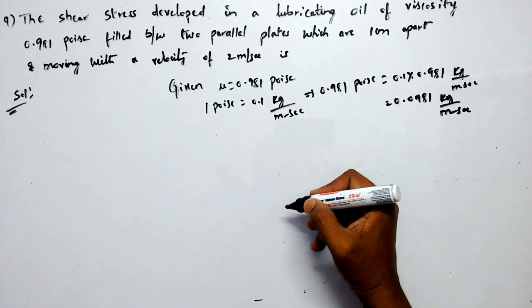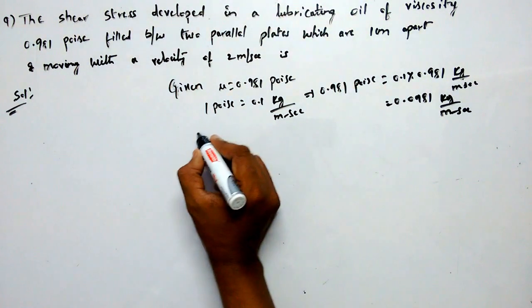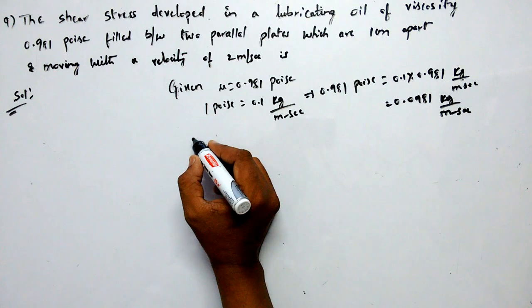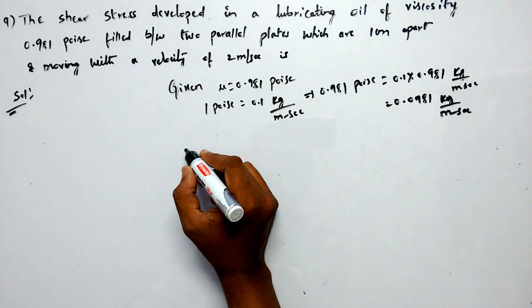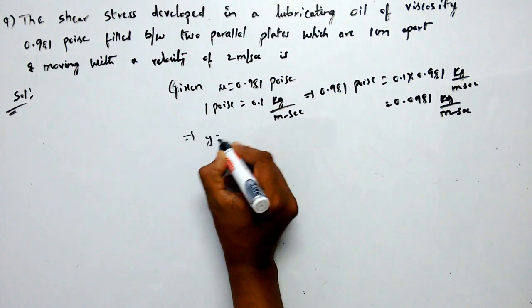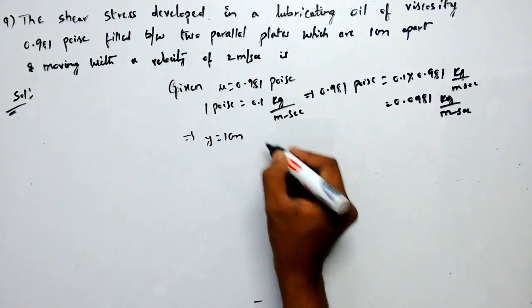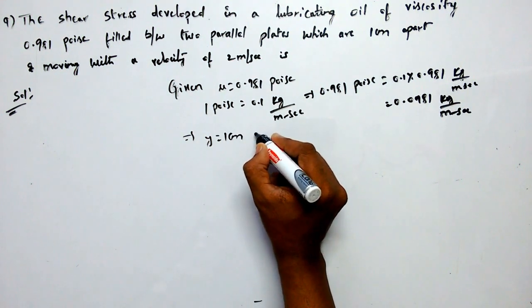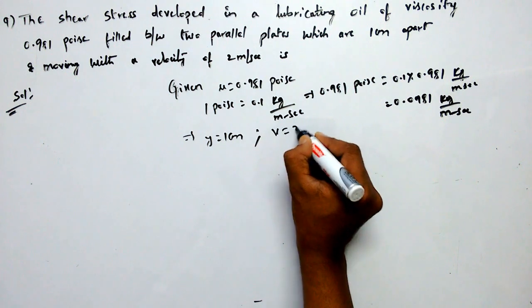Now, these two plates are 1 centimeter apart, therefore y equals 1 centimeter, and velocity equals 2 meters per second.